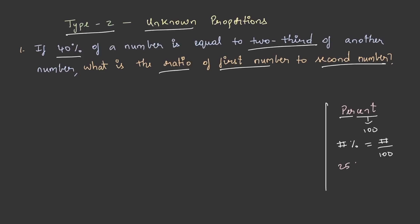Similarly, if it is 25 percent it is 25 by 100, 50 percent it is 50 by 100 and so on. Now we shall try to solve this question. 40 percent of a number is equal to two-third of another number. So let us take the two numbers as A and B. If 40 percent of A is equal to two-third of B,